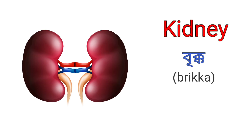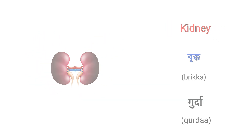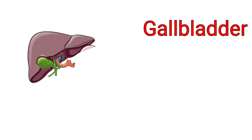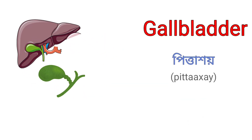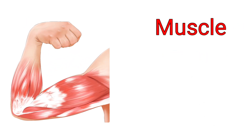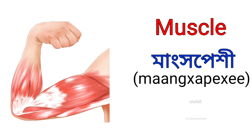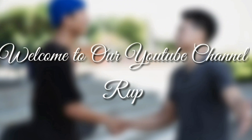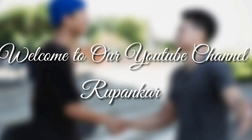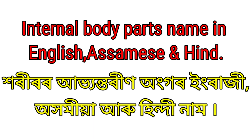Hello everyone, welcome back to my channel Ravanko sir. Today we are going to discuss about some internal body parts names in English, Assamese and Hindi. For example, Kidney is called Brikka in Assamese and Gurda in Hindi. Gall Bladder is called Pitta Khoi in Assamese and Pitta Sae in Hindi. Muscle is called Mangkho Pekhi in Assamese and Mangspeshi in Hindi.